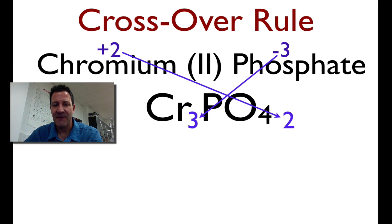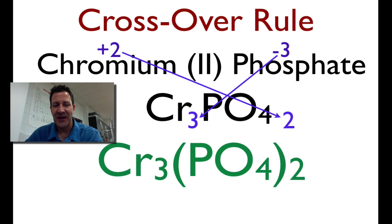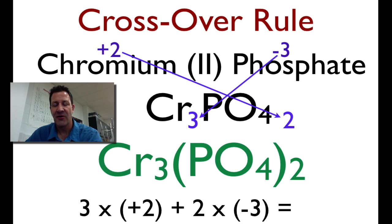And therefore, we know that the formula is going to look like that. Now, we have to make a little adjustment because we have 2 phosphates. So when we write the chemical formula, we have to put the phosphate in parentheses because the 2 applies to the whole PO4 polyatomic ion. So we write it as Cr3(PO4)2. And we can apply the math again just to check. Chromium is plus 2, we have 3 of those, so that's 6. We have 2 phosphates, each of those is minus 3. And 6 plus minus 6 equals 0.